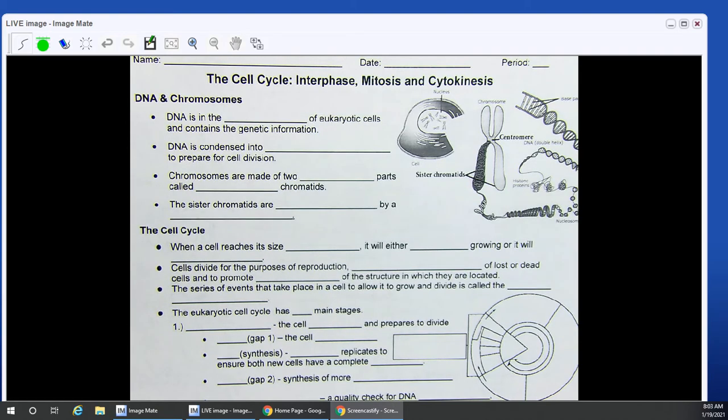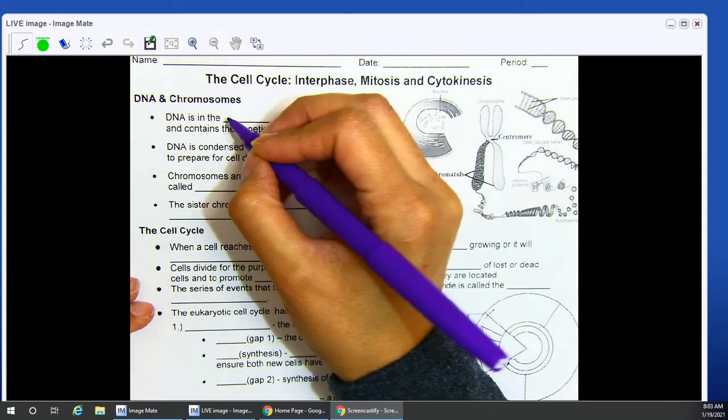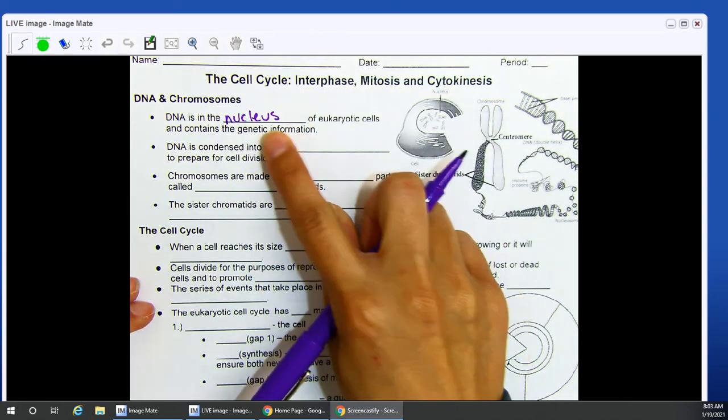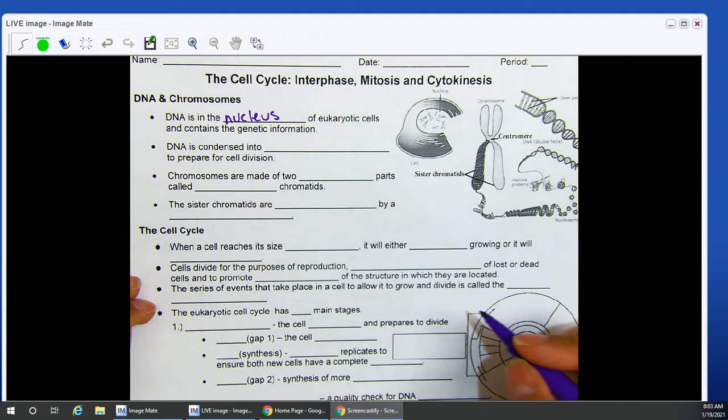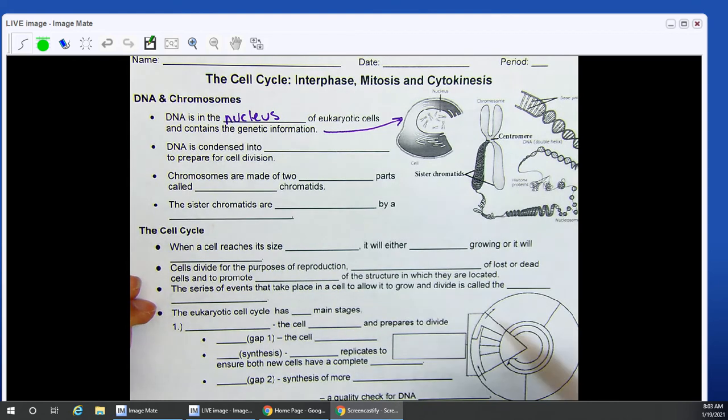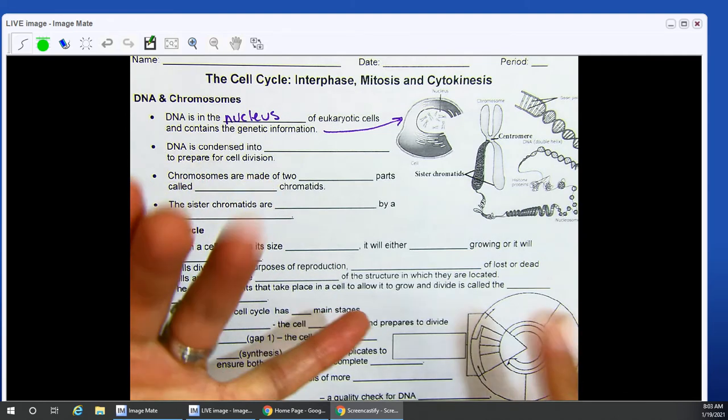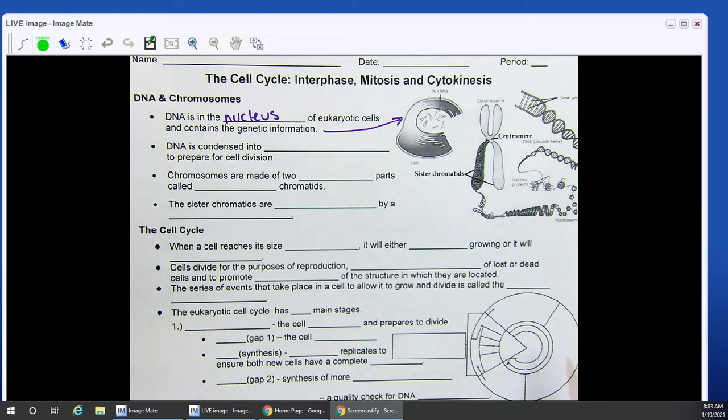We're going to start with talking about DNA and chromosomes. DNA is in the nucleus of eukaryotic cells. Our nucleus houses and keeps your genetic information safe. It contains all of your genetic information. That means anything from how many fingers do you have, what color are your eyes, the color of your hair, the texture of your hair. Everything that is you is here in this genetic information.